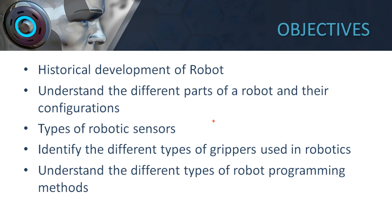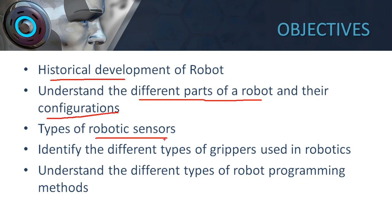The important objectives of this video lecture series are: to understand the historical development of the robot, to understand the different parts of a robot and their configurations, the types of robotic sensors, and to identify the different types of grippers used in robotics and understand the different types of robot programming methods.